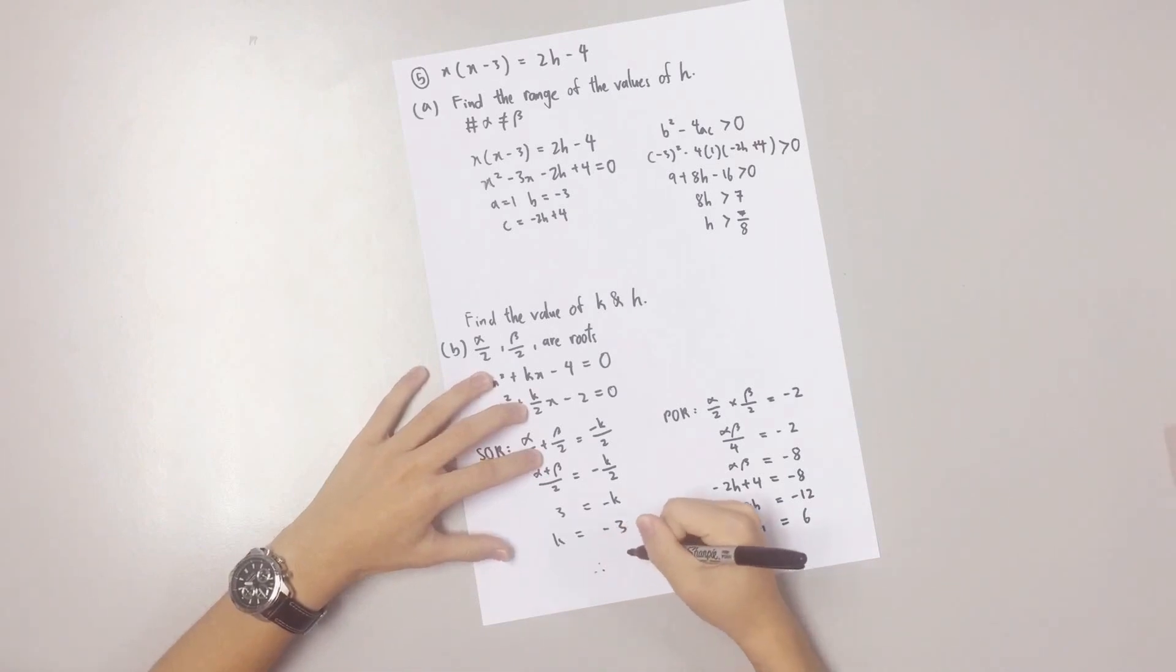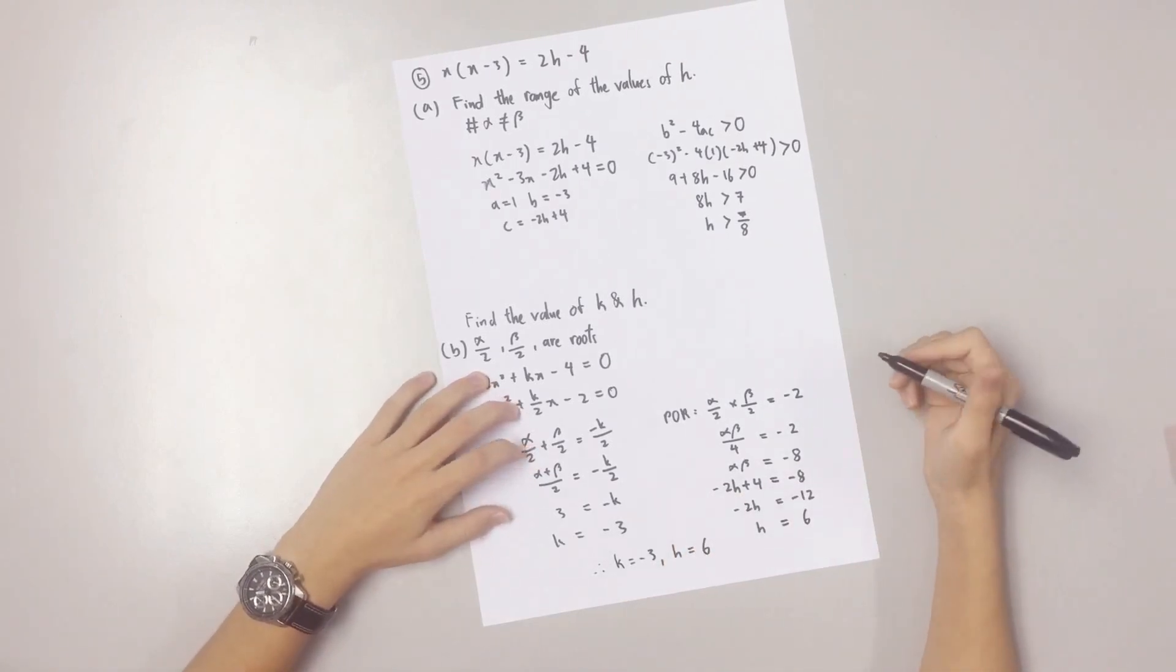Therefore, the answer is K equals negative 3 and H equals 6. Thank you for watching.